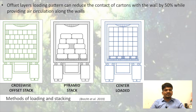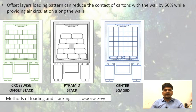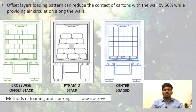Offset layer loading patterns can reduce the contact of cartons with the wall by 50 percent while providing air circulation along the walls. Different kinds of stacking methods are displayed: the crosswise offset stack, the pyramid stack, and the center-loaded stack. Basic pallet or unit load patterns in a trailer or container include straight, centerline, sidewall, and pinwheel staggered for distributing weight. These different unit load patterns can be followed as per products and the capacity of the refrigerated van to increase energy efficiency and product quality.